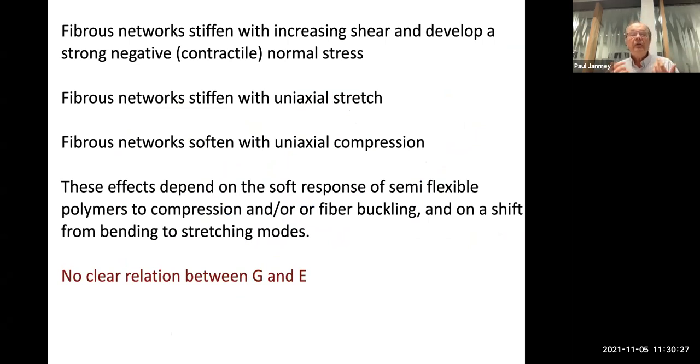Let me finish here. The thing about these biopolymer networks is that these fibrous networks stiffen with increasing shear and they develop a negative, that is, contractile normal stress. The fibrous networks also stiffen with uniaxial stretch, but they do the opposite. They soften with compression. These nonlinear effects depend on the soft response of a semi-flexible polymer to compression, that polymers that are intrinsically easier to compress than stretch automatically give you this. But even for stiff linear elastic objects that are sparsely connected, you can get the same effect by this mismatch between bending and stretching modes. Let me stop there.